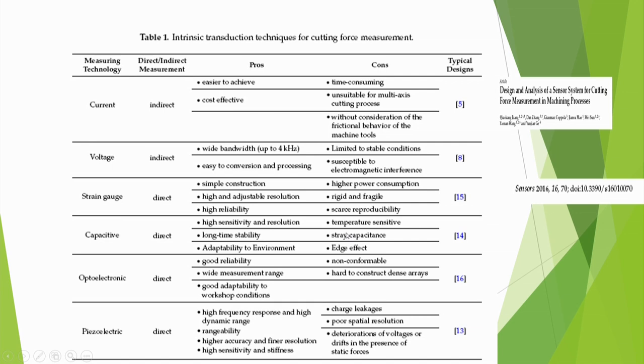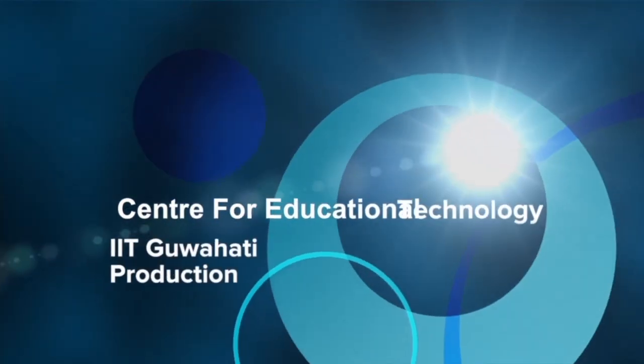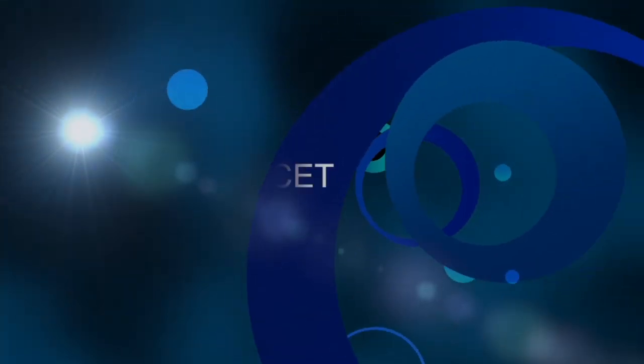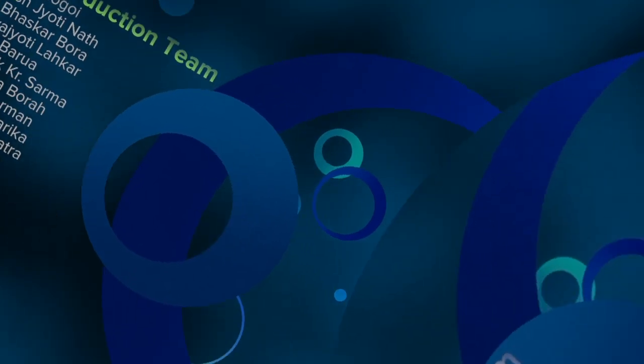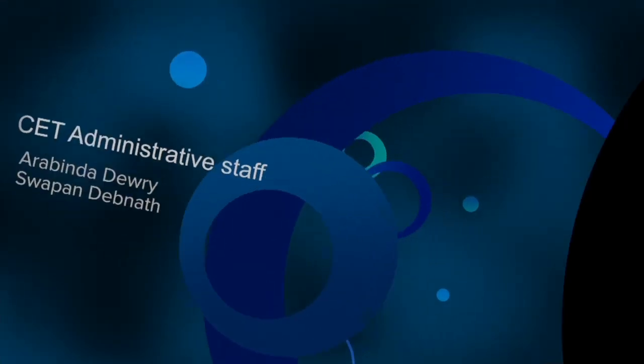Typical dynamometer readings show cutting forces fluctuating around a mean value — for example, around 225 N with minor dynamic variation. Forces can also be measured indirectly by motor current or voltage, which is cost-effective but unsuitable for multi-axis processes. Strain gauges offer direct measurement with high resolution; piezoelectric types offer high frequency response but suffer from charge leakage and drift. Dynamometers are expensive and mostly used in laboratory conditions.